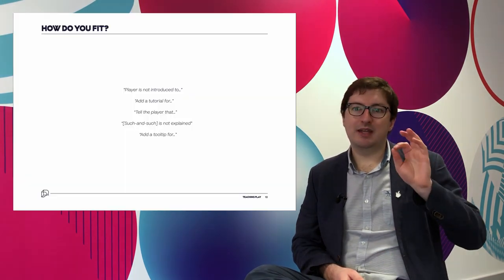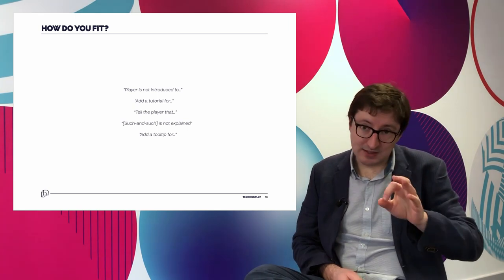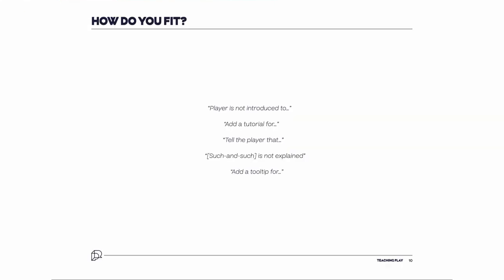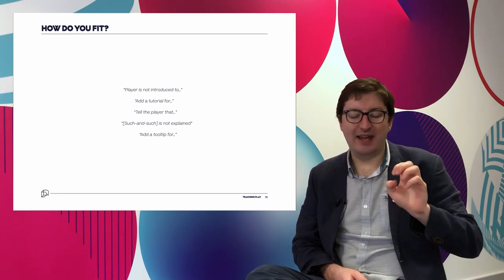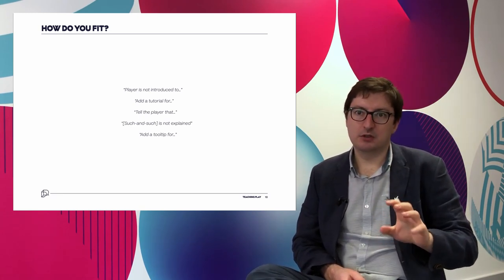This talk is targeted at a particular trait of thinking among junior researchers. In my time as a hiring manager, mentor, and trainer, I've encountered very many examples of advice from entry-level games user researchers — saying things like: 'This is an issue because the player is not introduced to such and such,' 'This thing isn't explained,' 'Add a tool tip,' 'Tell the player how this works.' This is a common, knee-jerk response to weak learnability.